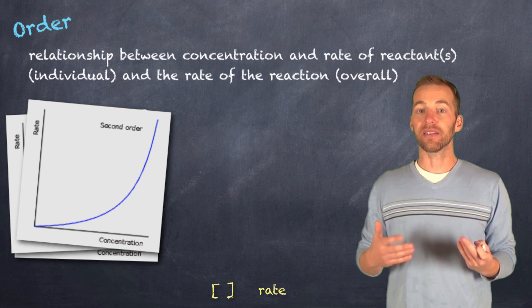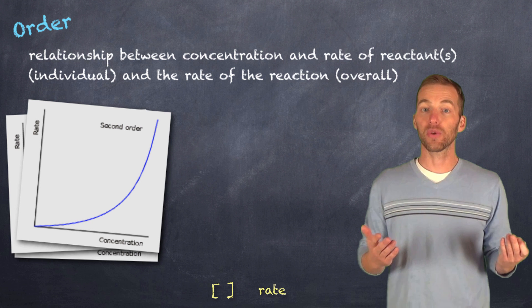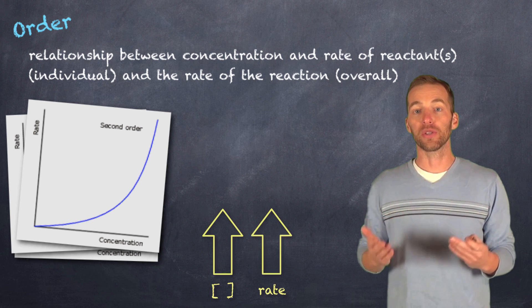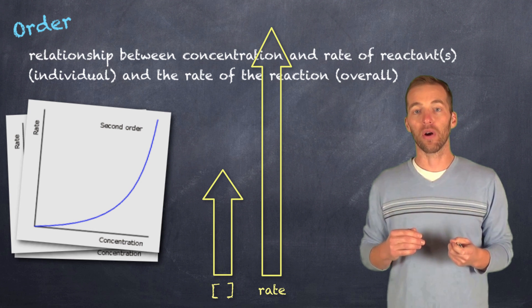And when we get into something that is second order, we now raise any change in concentration to the power of two, or we square it, so that if we were to double the concentration, we would get a quadrupling in the overall rate.